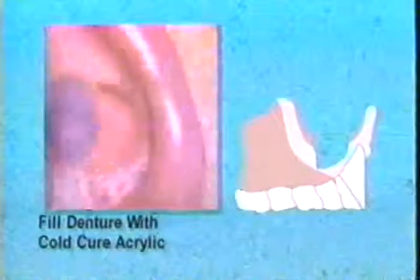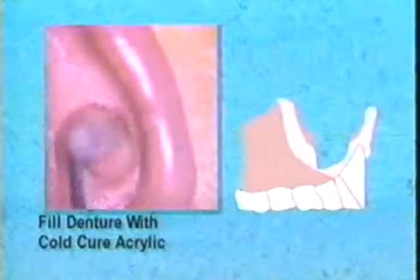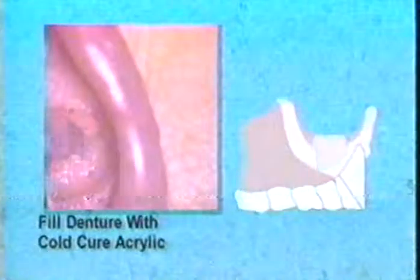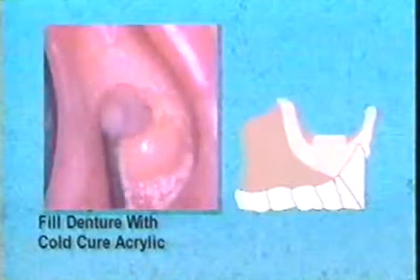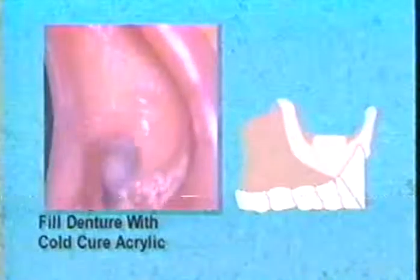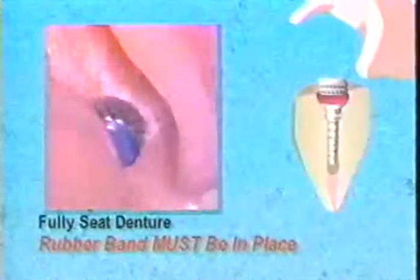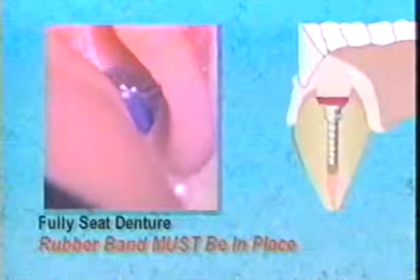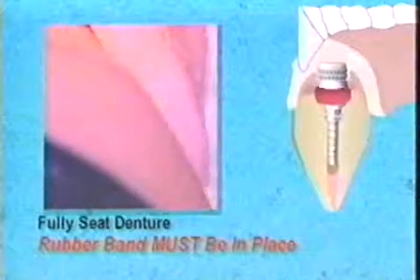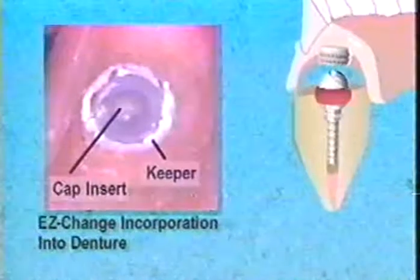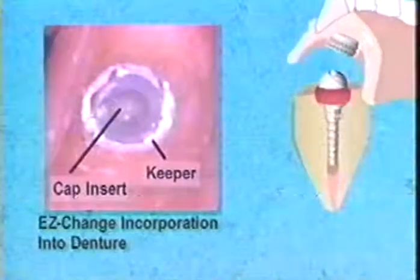Place pink cold-cured acrylic into the relief portion of the denture and place over the ridge and let set. Make sure the rubber band is covering the height of contour of the head; if not, there is a risk that the cold-cured acrylic could lock in under the head, making removal of the denture difficult. The rubber band is now discarded and the flash trimmed. The overdenture is now ready for use.